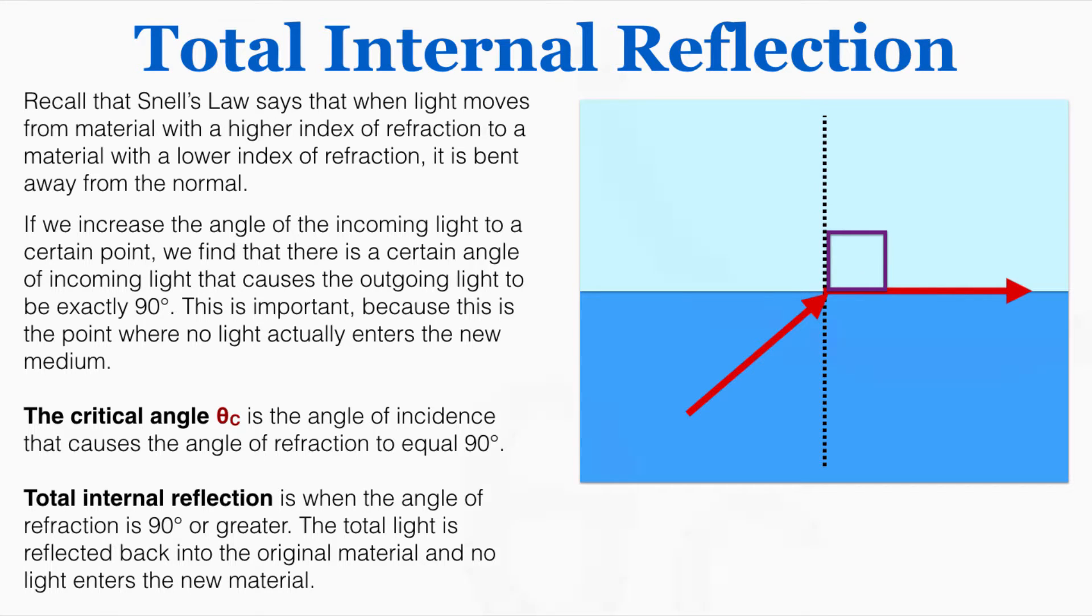The critical angle is the angle of incidence that causes the angle of refraction to be equal to 90 degrees. There's a certain angle that light can enter a material so that when it leaves, it's at a 90 degree angle to the normal of that material.